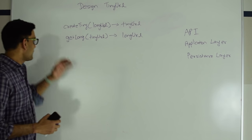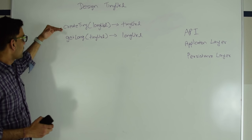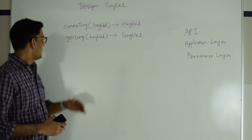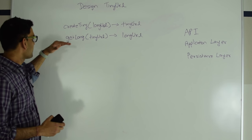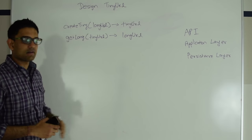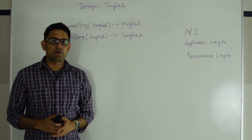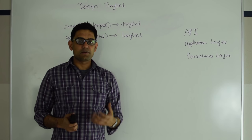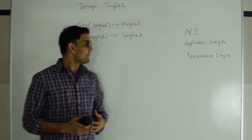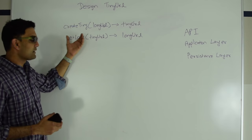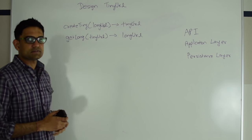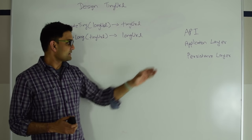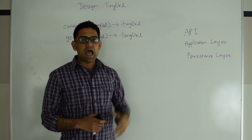For this question, the API is extremely simple. You have a create_tiny which takes a long URL and returns the tiny URL, and then you have get_long which takes a tiny URL and returns the long URL. If you need to add features like expiration time or the ability to provide a shorter URL, you can easily do that by updating this API. So we won't spend a lot of time on the API and next let's jump to the application layer.